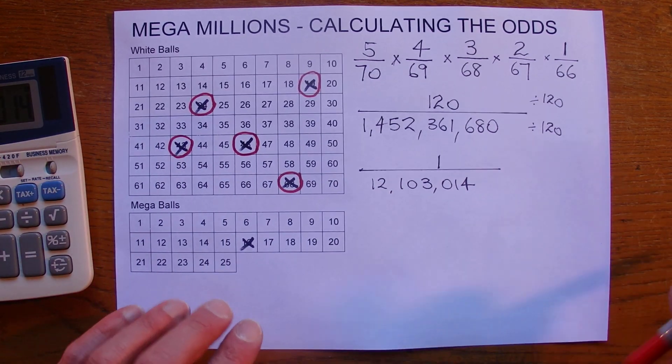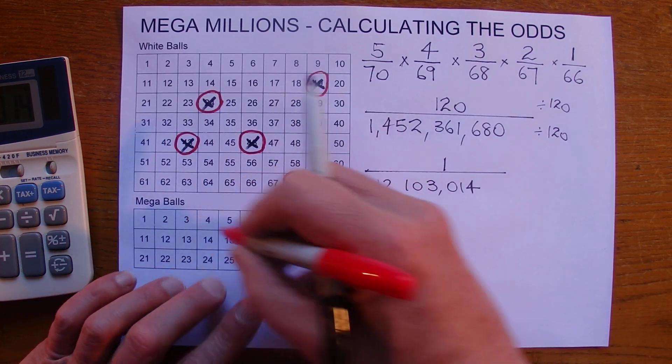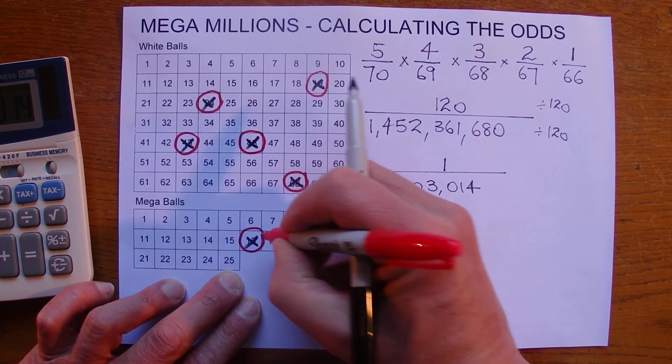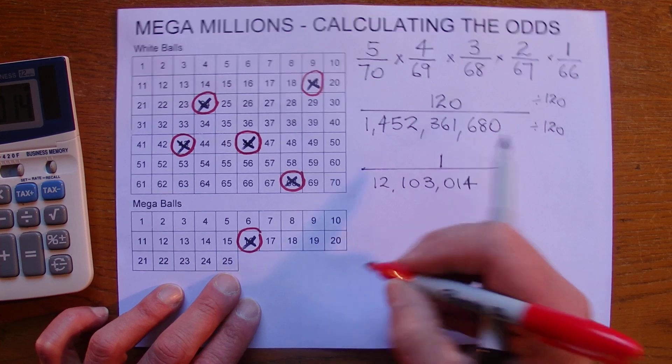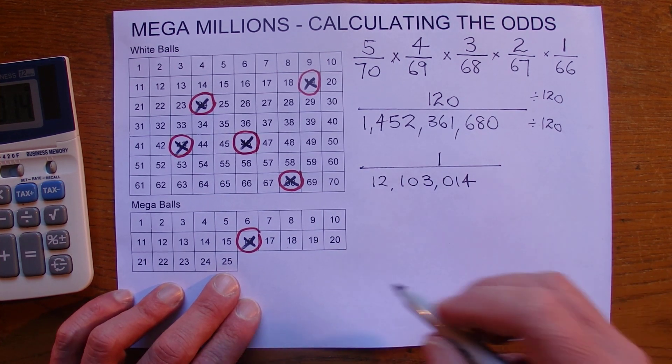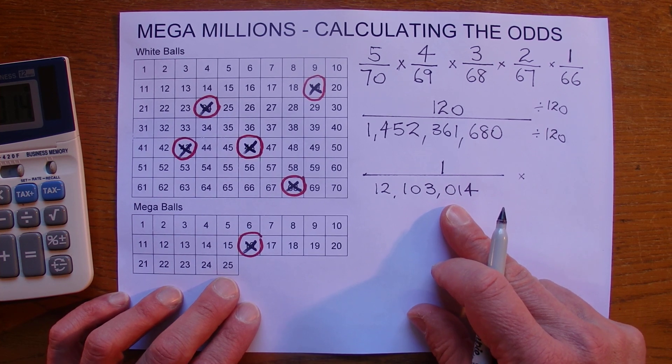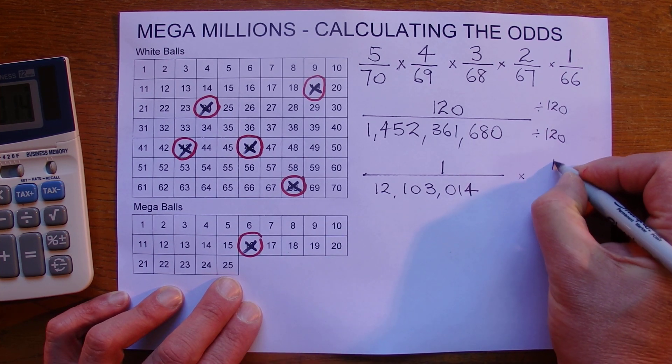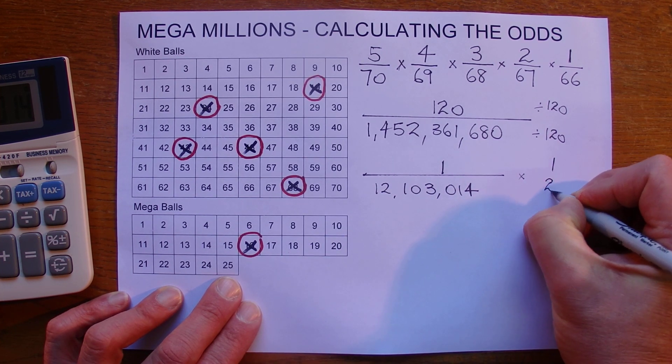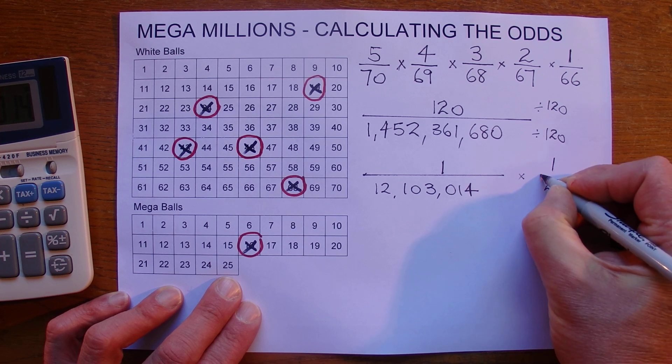But to get the first prize, we've also got to get the mega ball. And there's one chance in 25 that we're also going to get the mega ball. So we multiply that one in 12 million out by one chance in 25 for the mega ball.